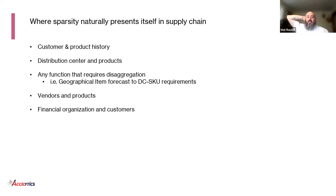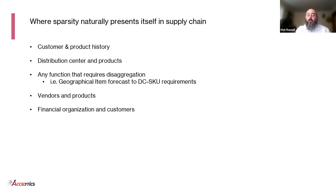Customer and product history is one natural use case. Distribution center and products is another — not every distribution center is going to carry every product. Any function that requires disaggregation, such as a geographical item forecast to DC SKU requirements, requires deep modeling knowledge to fit within the 130 gigabyte normal workspace. Because you can't dimensionalize something by geography, product SKU, and DC simultaneously, you end up having to do three or four steps for disaggregation when it should be done in one. Vendor and products is another case, as is financial organization and customers. This is really where we've had conversations about sparsity with our customers, and where Polaris makes those conversations no longer necessary.